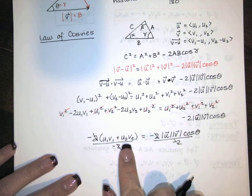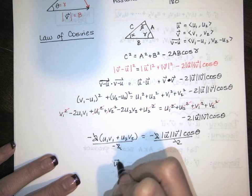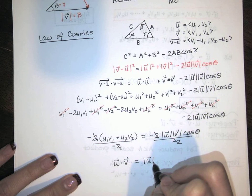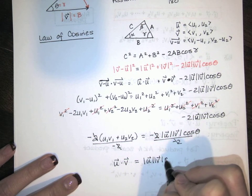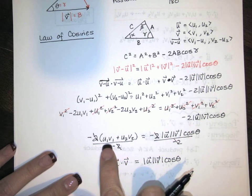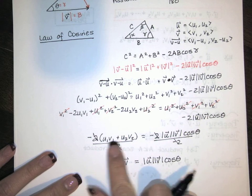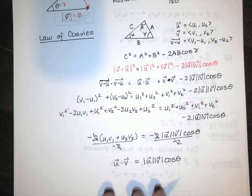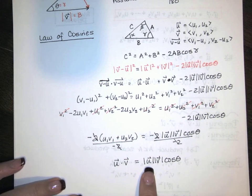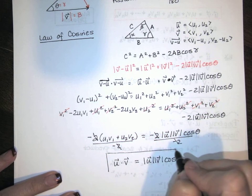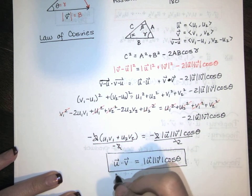In 2D, that left-hand side is exactly the dot product. So u dot v equals the length of u times the length of v times the cosine of the angle between them. This is the geometric definition of the dot product.